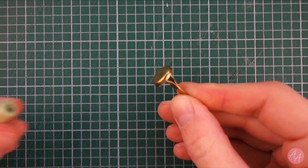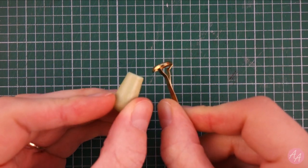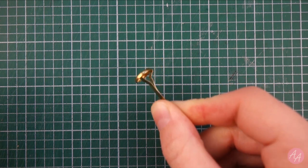Next up is a jam jar, which I'm making using a split pin and a wooden bead. The top of the split pin will be the lid of the jar, so first I need to cut off the arms.